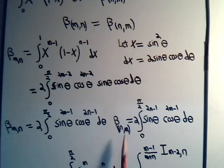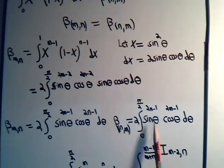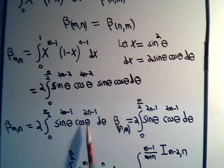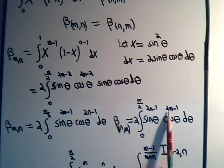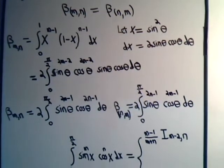Likewise, beta of n,m is going to be 2 times the integral from 0 to π over 2, only now the sine of theta is to the 2n minus 1 power instead of the 2m minus 1 power, and the cosine of theta is 2m minus 1 power, d theta. So we're going to use all these different expressions. We just want to get them introduced now and kind of get it out of the way.